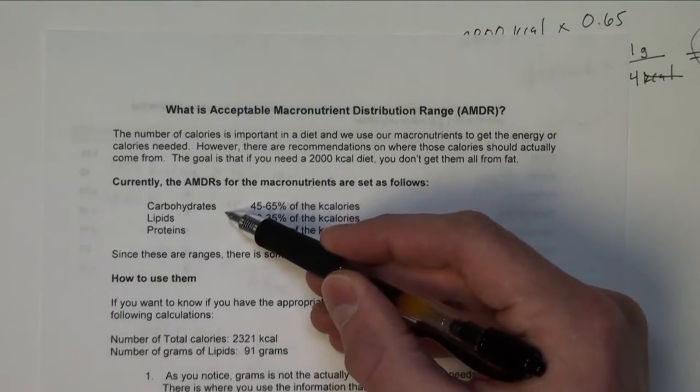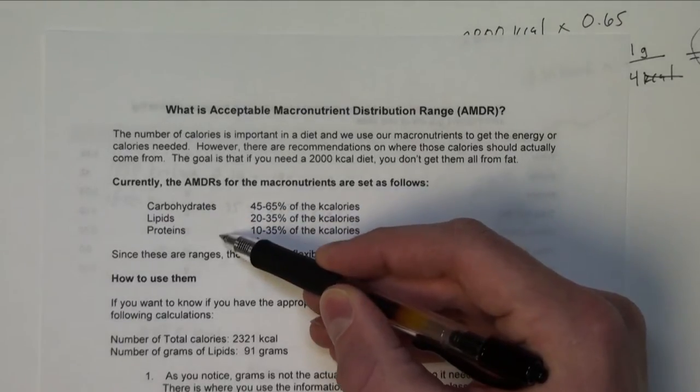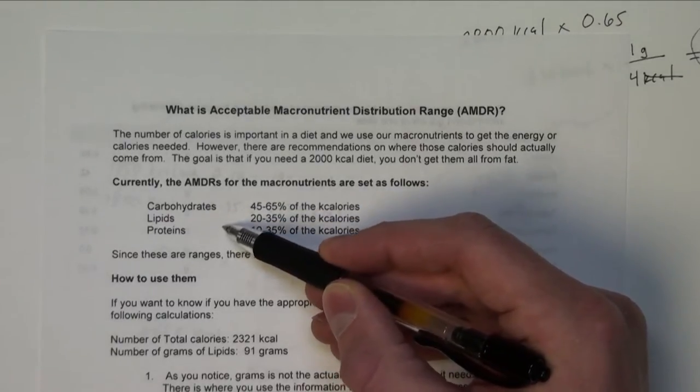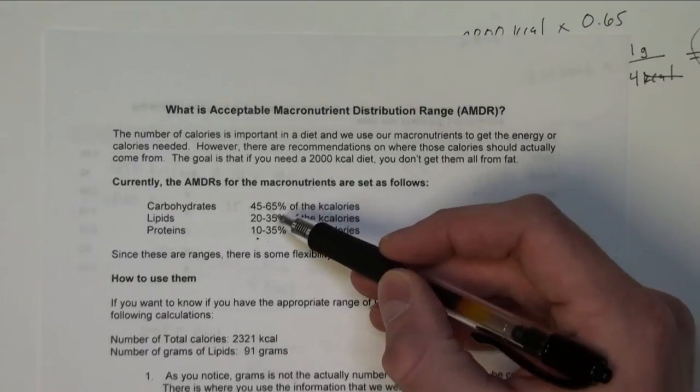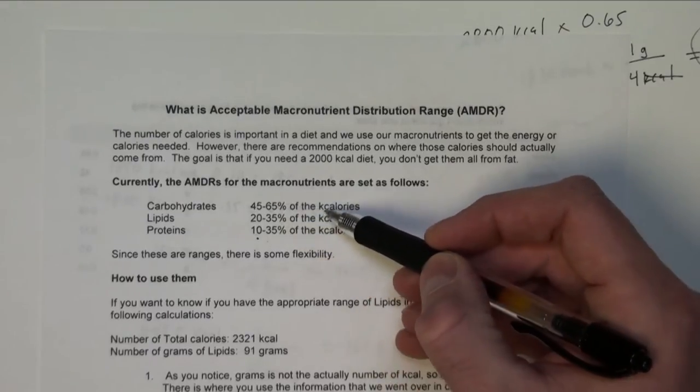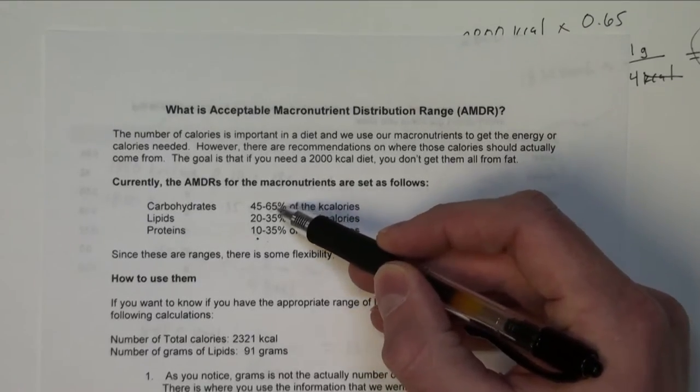So those macronutrients being carbohydrates, lipids, and then proteins. Currently, what people are saying is approximately 45 to 65 percent of your total calories should be coming from carbohydrates,